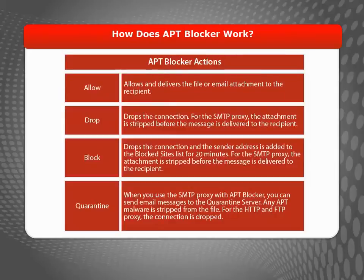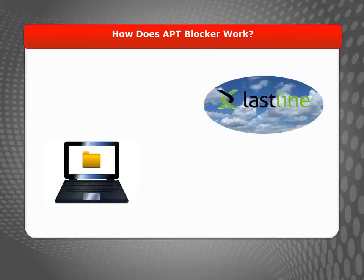When Lastline receives the hash file, it's compared to a database of previously analyzed files and the scan results are returned immediately. If the analysis shows that the file is a match to a known malware threat, your Firebox will take the action you configure when you enable APT Blocker. The file is allowed through if it doesn't match the results of a previously known threat.